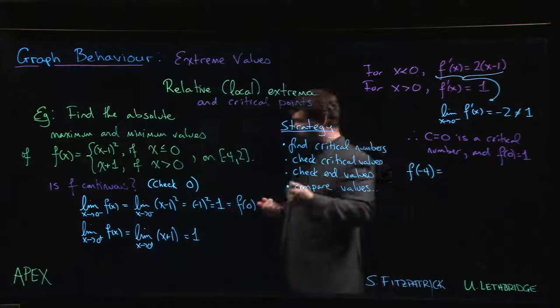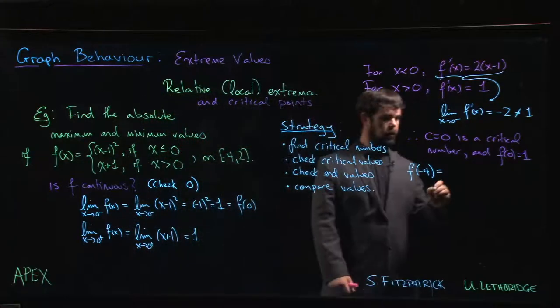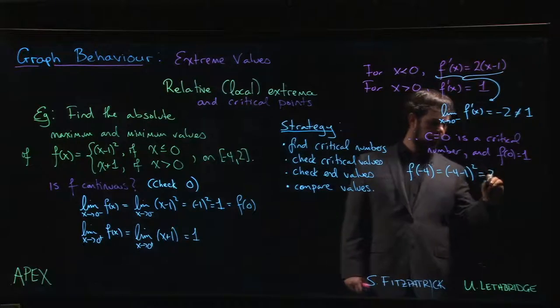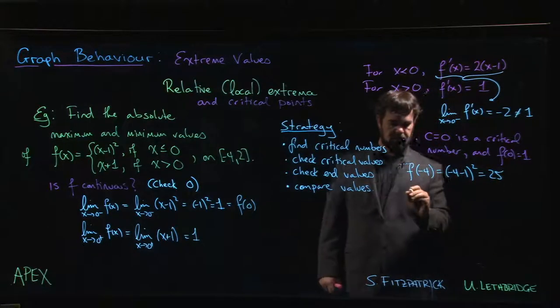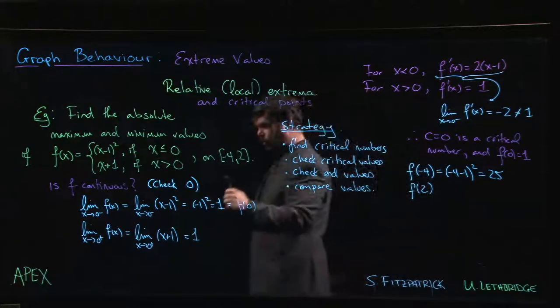So f at minus 4, since minus 4 is less than 0, we have to take minus 4, plug it into this function. We have minus 4 minus 1 squared, which comes out to 25.